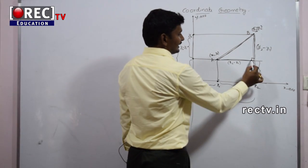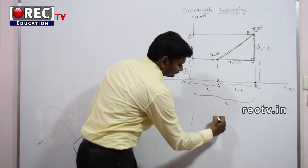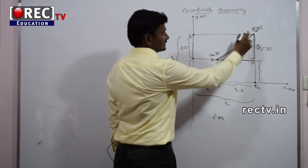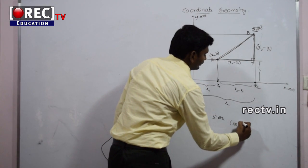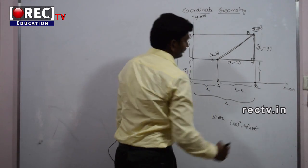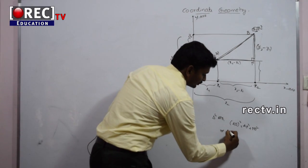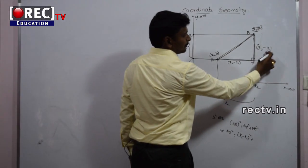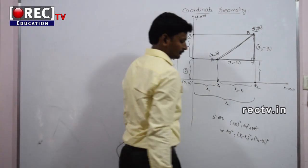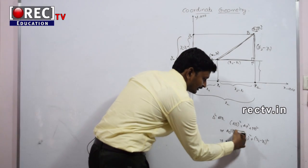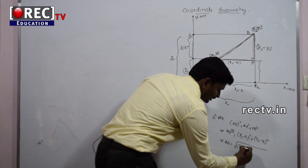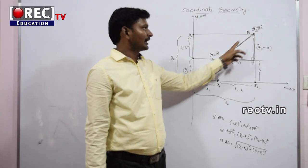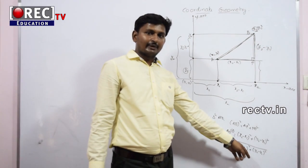From the right angle triangle APB, by using the Pythagoras theorem: hypotenuse squared equals side 1 squared plus side 2 squared. So AB² = AP² + PB² = (X2 − X1)² + (Y2 − Y1)². Therefore, AB = √[(X2 − X1)² + (Y2 − Y1)²]. The distance between any two points (X1, Y1) and (X2, Y2) is √[(X2 − X1)² + (Y2 − Y1)²].